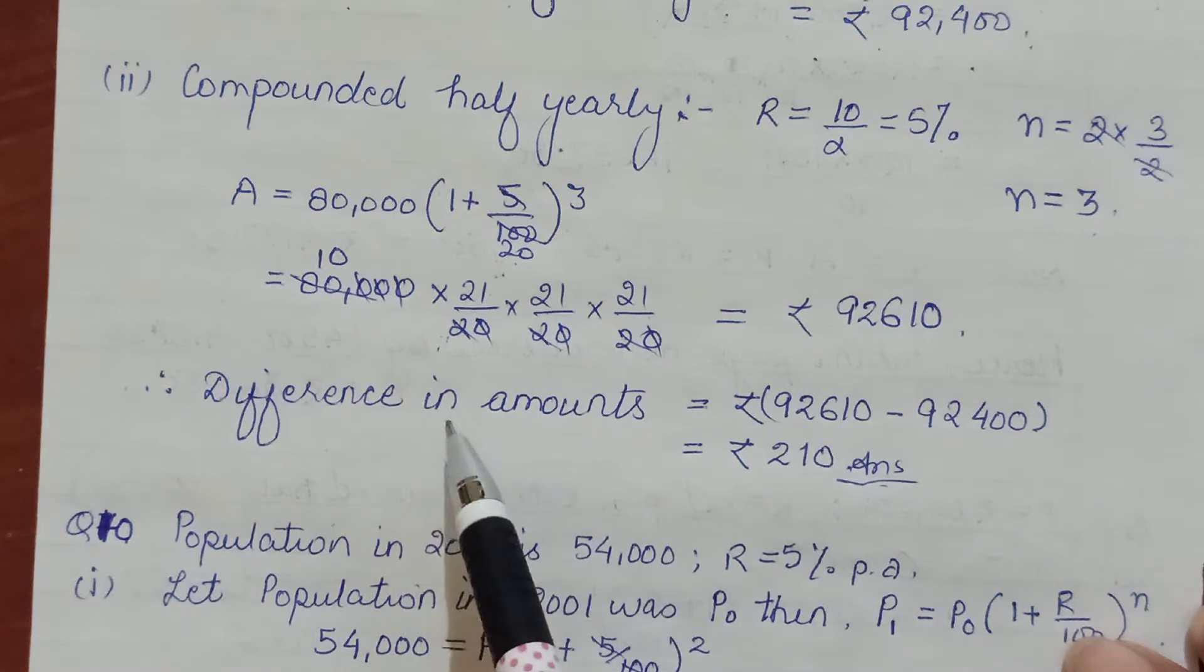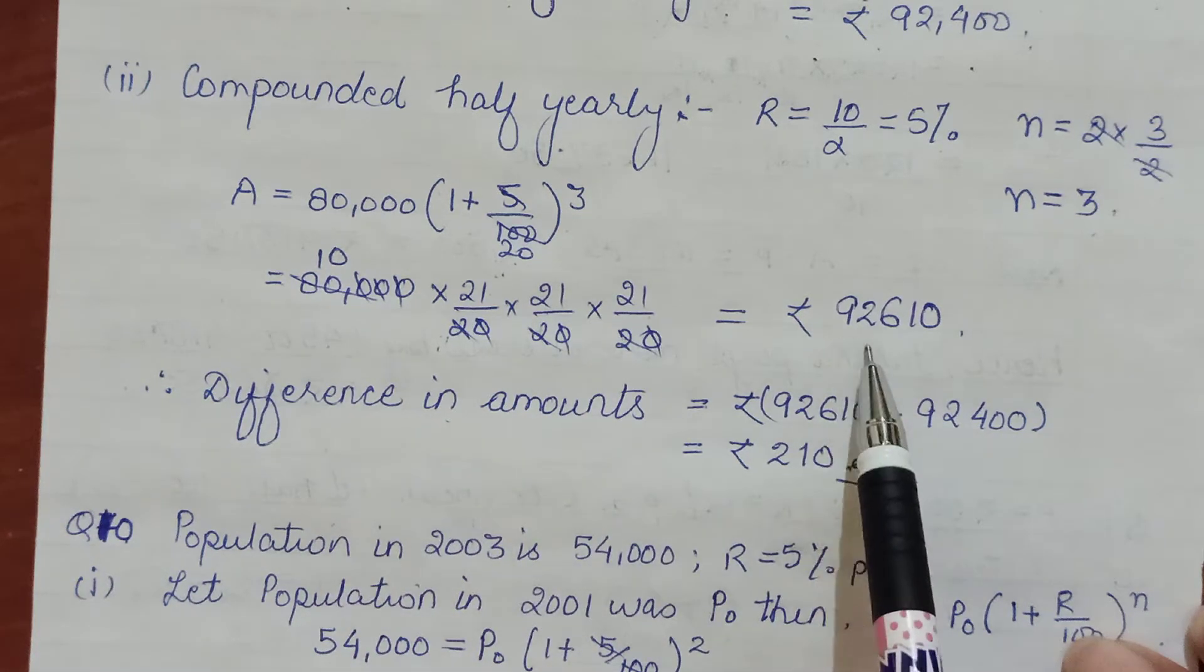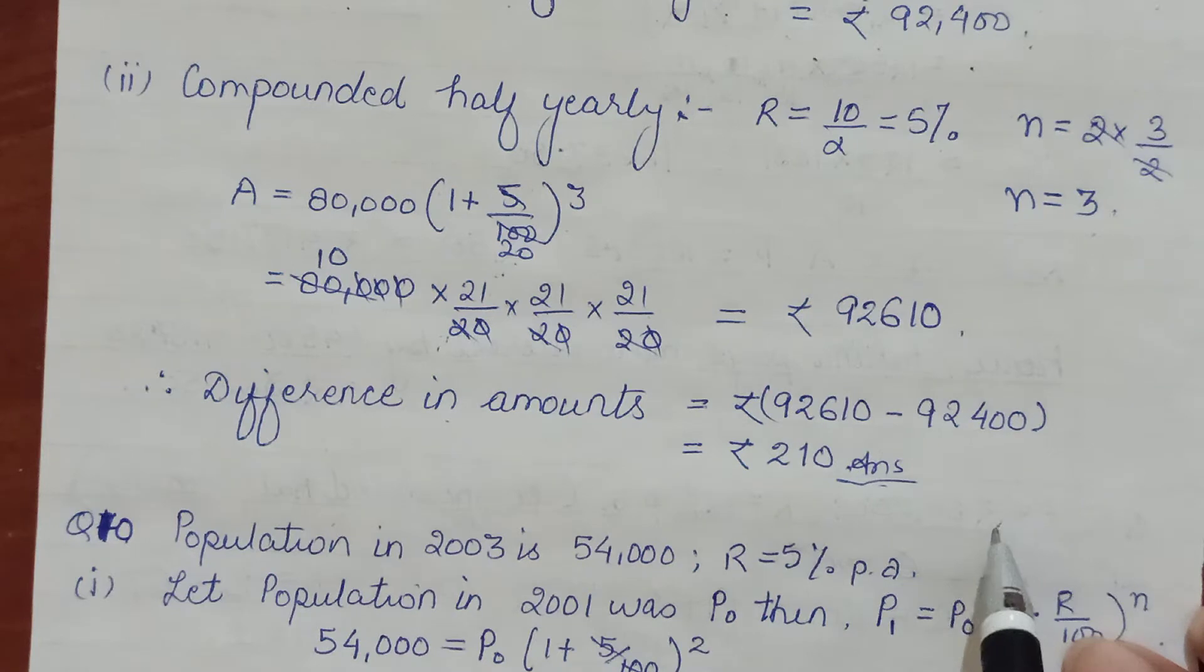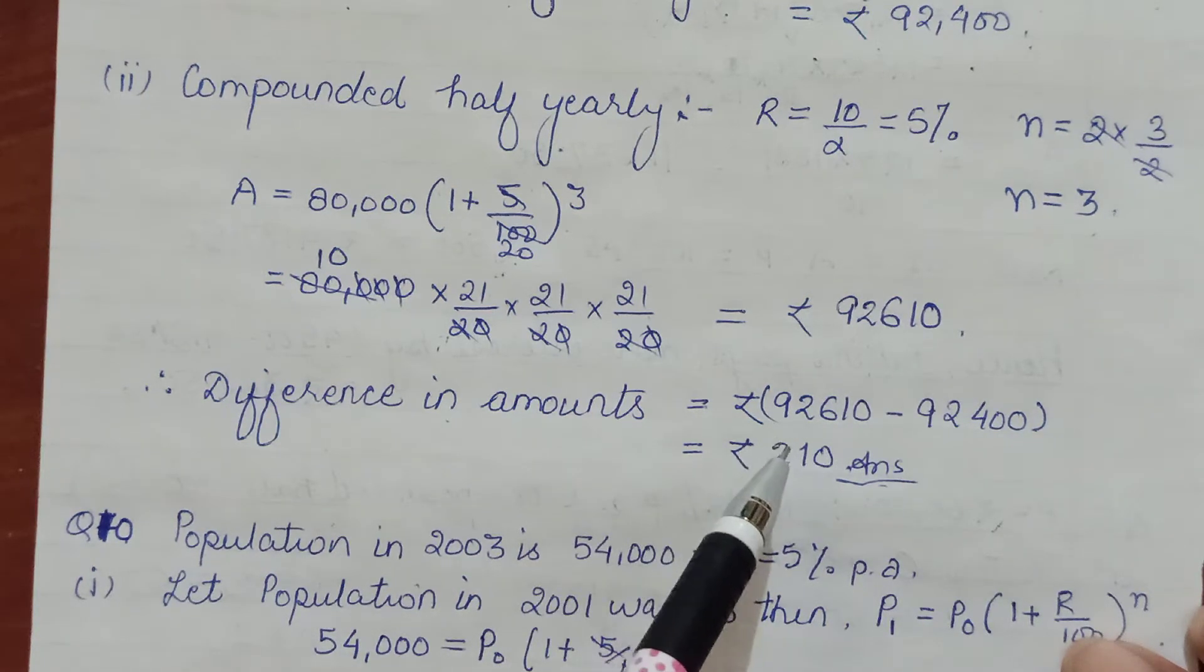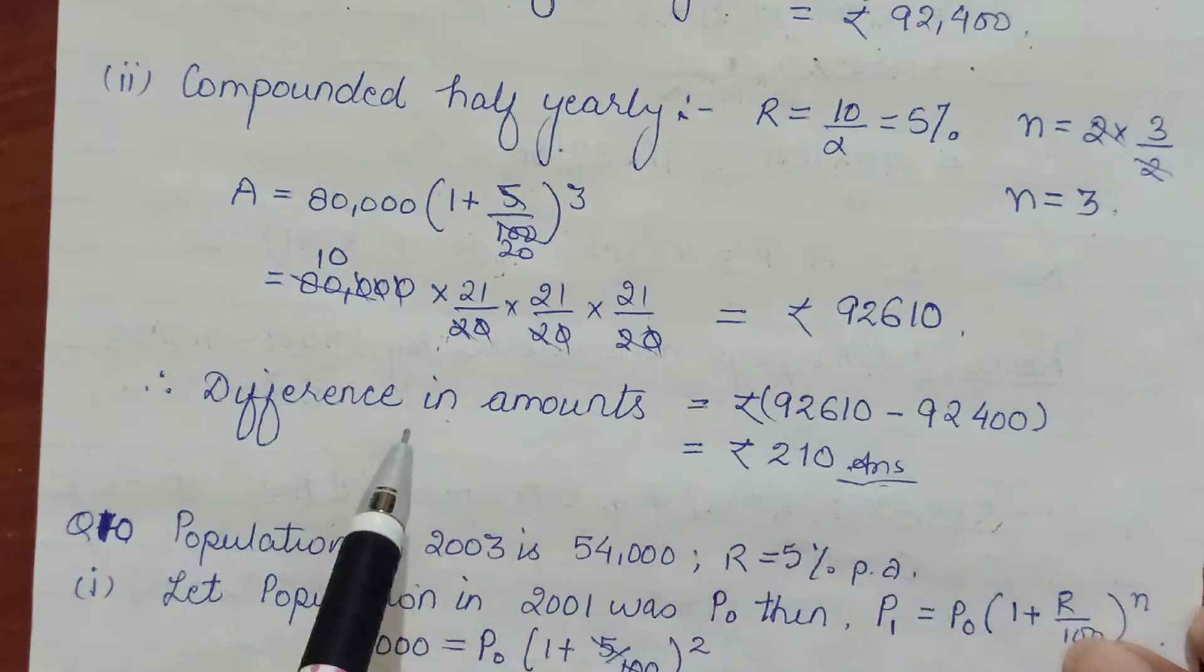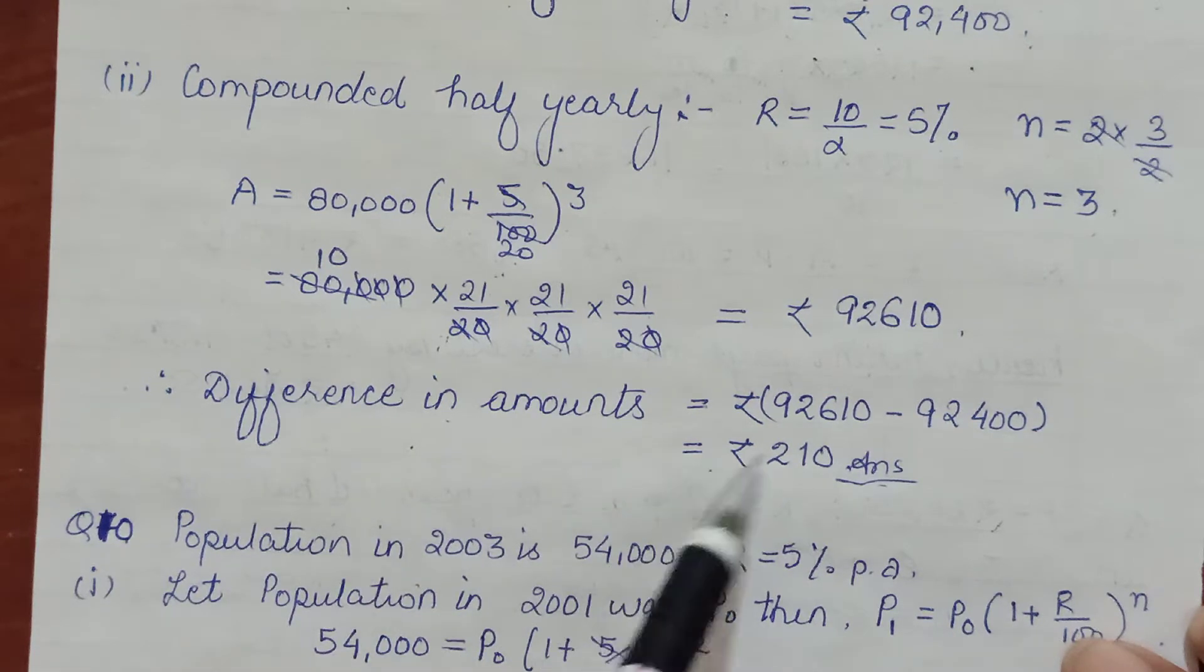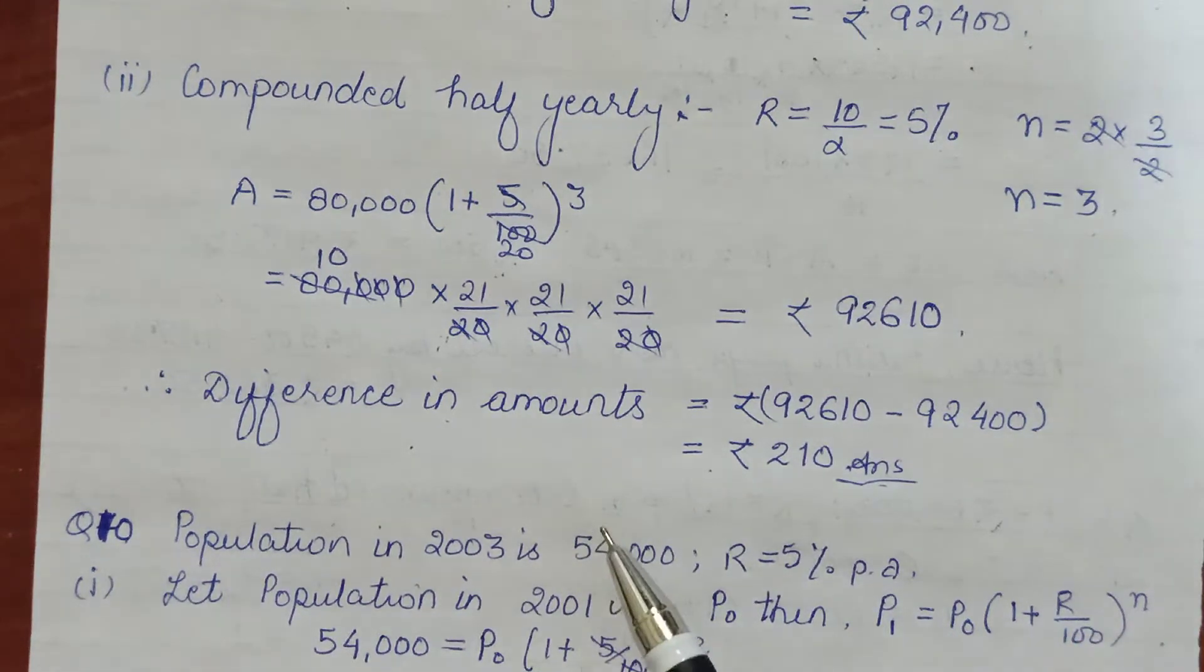Naturally this is bigger than when being compounded annually. The difference of this was your question—what will be the difference in amount? So you subtract the two and find your answer.